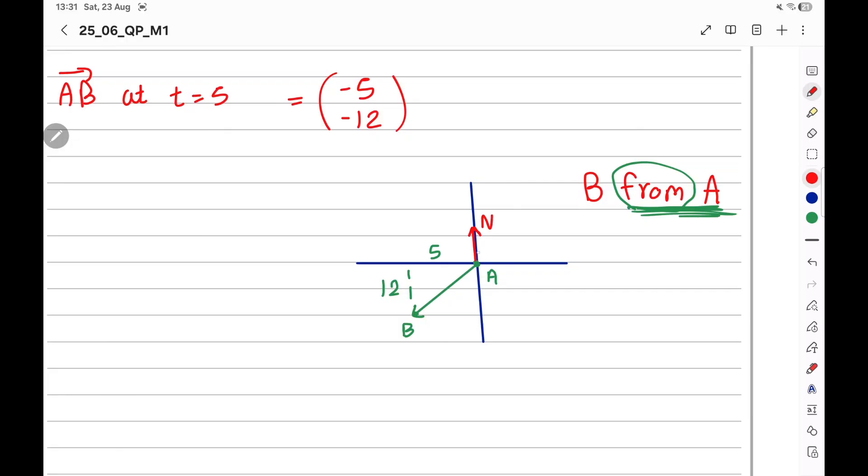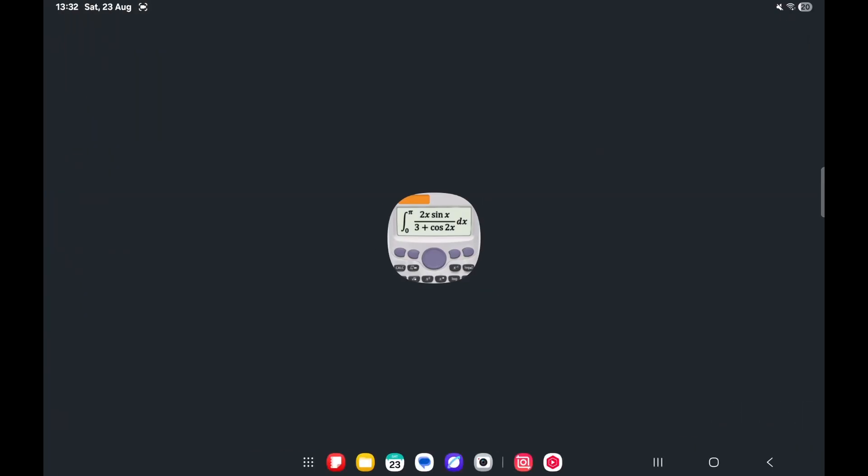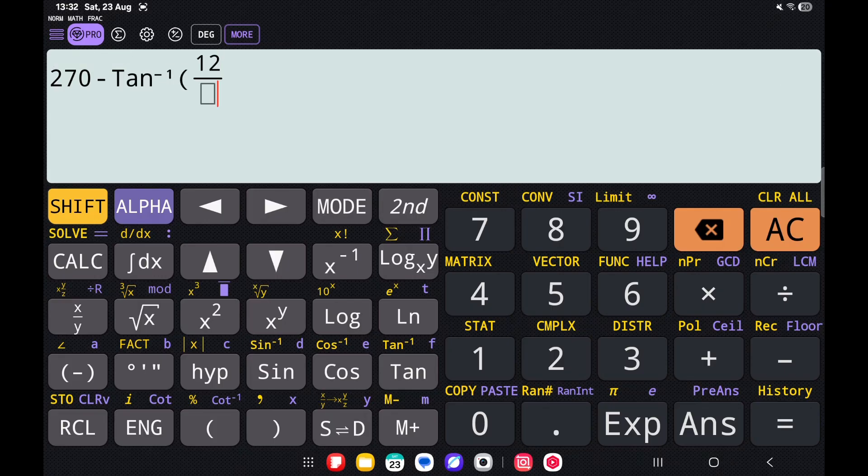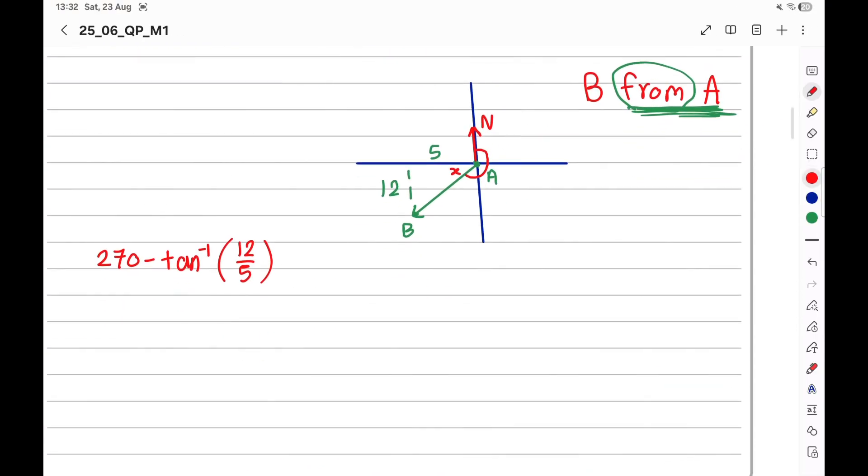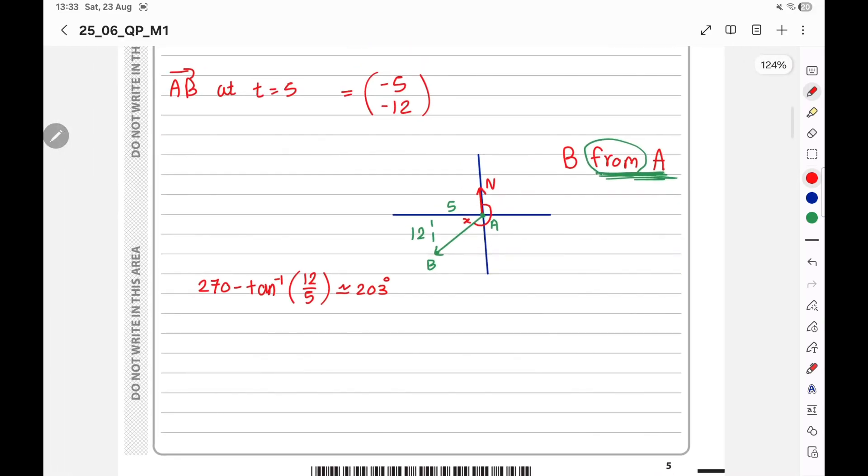And turn clockwise. I want to calculate all this angle. This angle will be equal 270 minus X. X is equal to tan inverse 12 over 5. Opposite over adjacent. 270 minus tan inverse 12 over 5. Calculate on the calculator. 270 minus tan inverse 12 over 5. 202.6, which means 203 degrees. 203 degrees. This is approximation to three significant figures or to the nearest degree.